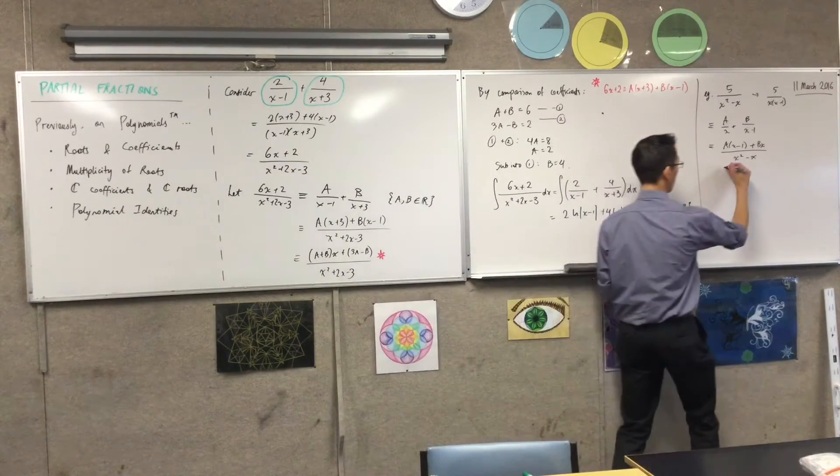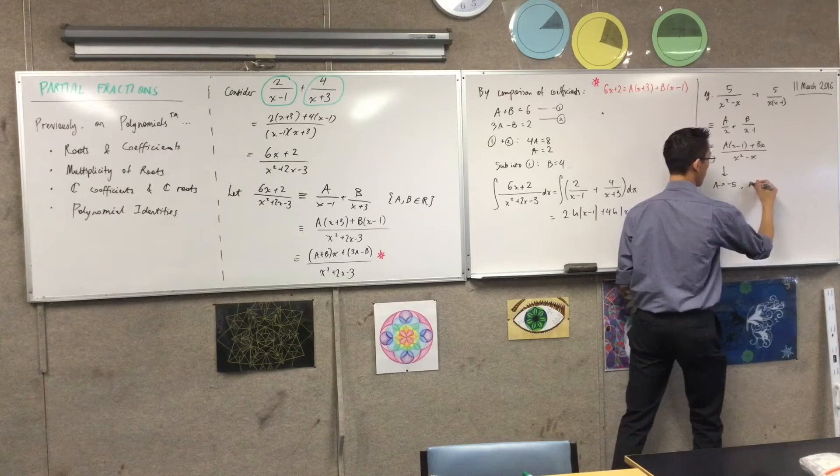What did you get for A? A equals negative 5. Yeah. And B equals 5. Fantastic.